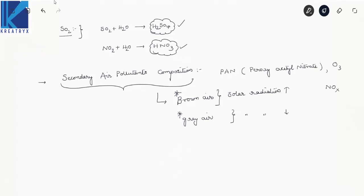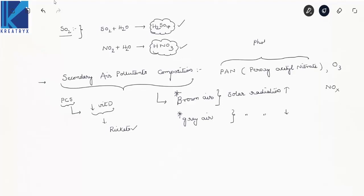What are the harmful effects of photochemical smog, PAN, and ozone? Photochemical smog results in a decrease of vitamin D production, leading to a disease called rickets. Peroxyacetyl nitrate (PAN) damages chloroplasts, thus decreasing the photosynthetic efficiency of plants.